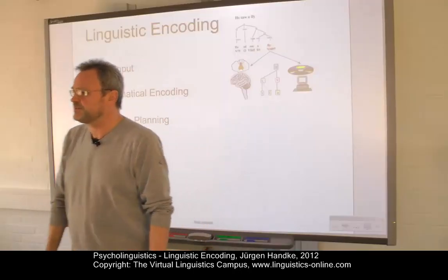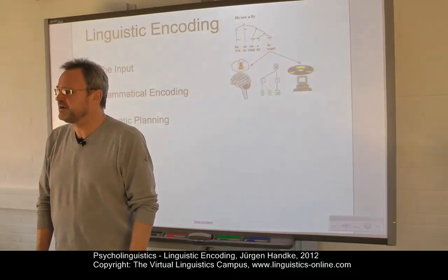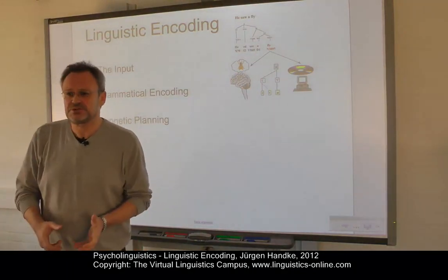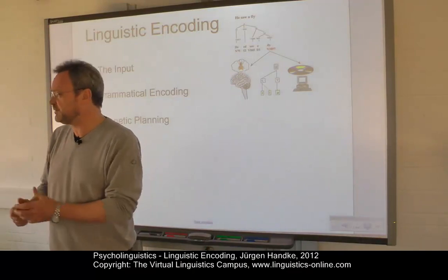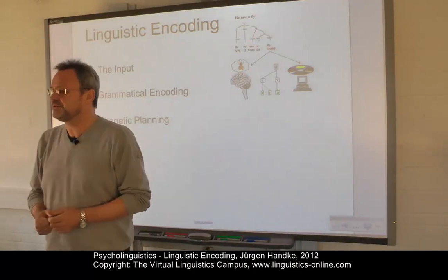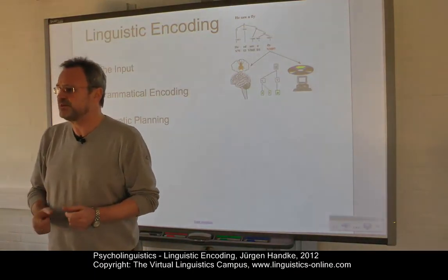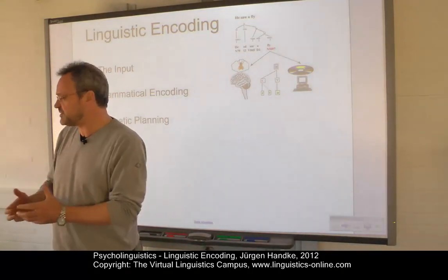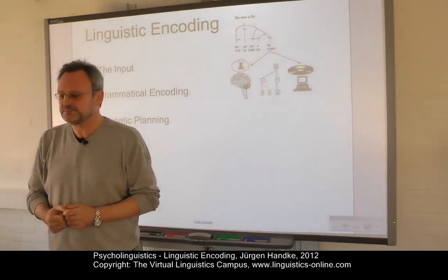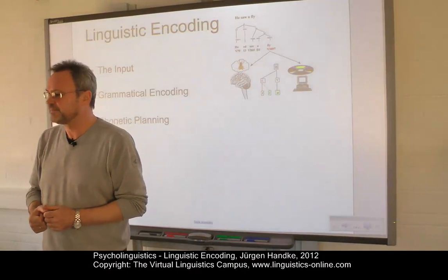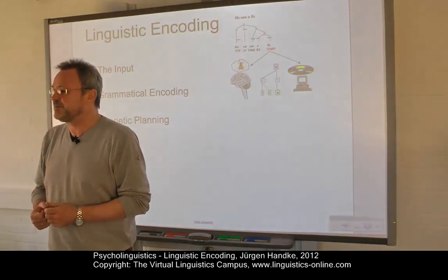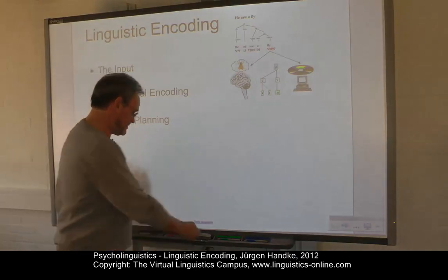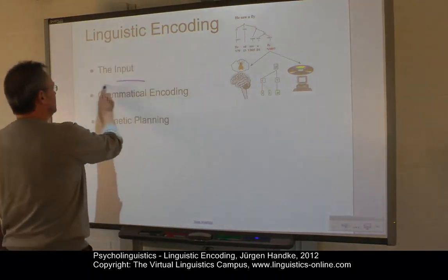Once a conceptual structure or part of it has been generated, the process of linguistic encoding can be initiated. This process can be subdivided into two successive stages: the stage of grammatical encoding and the stage of phonetic planning. Both levels of language production will be considered in detail in the following.